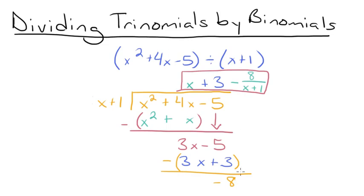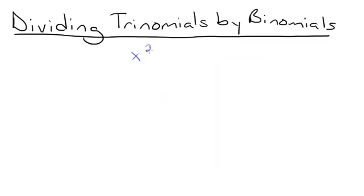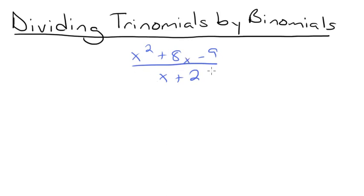When dividing, you will sometimes have remainders like we did here. This is exactly how you would handle them, and it's okay that things don't always divide out perfectly. Let's try another problem: x squared plus 8x minus 9 over x plus 2. This problem is written in fraction form, but remember a fraction bar always represents division, so this is just asking us to divide x squared plus 8x minus 9 by x plus 2.